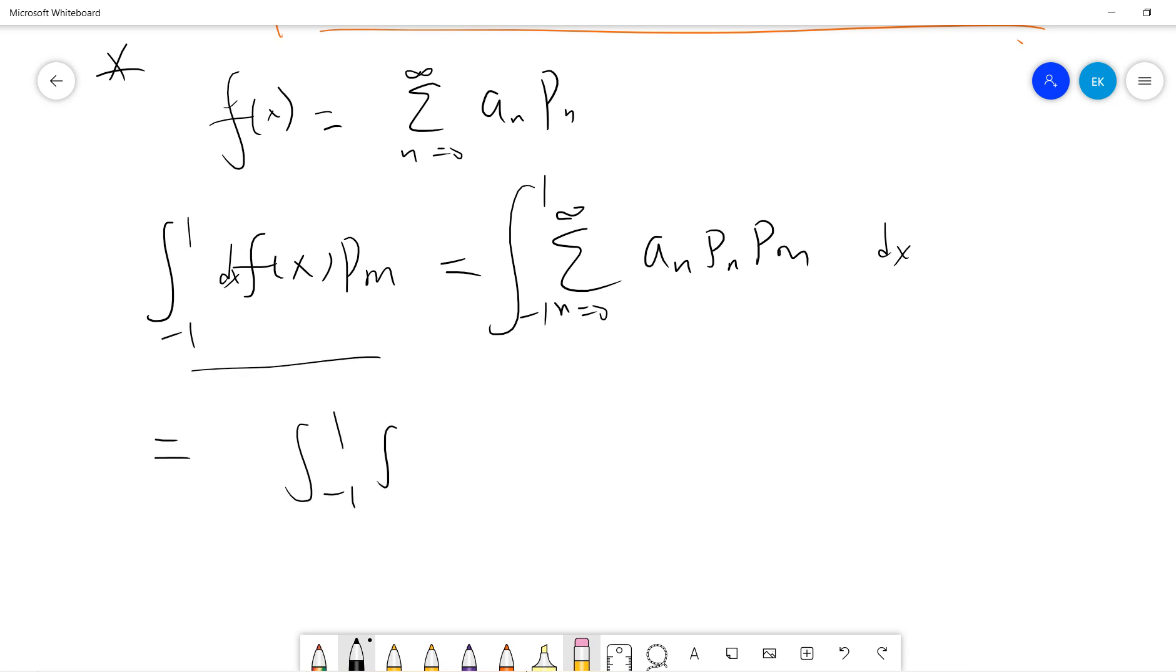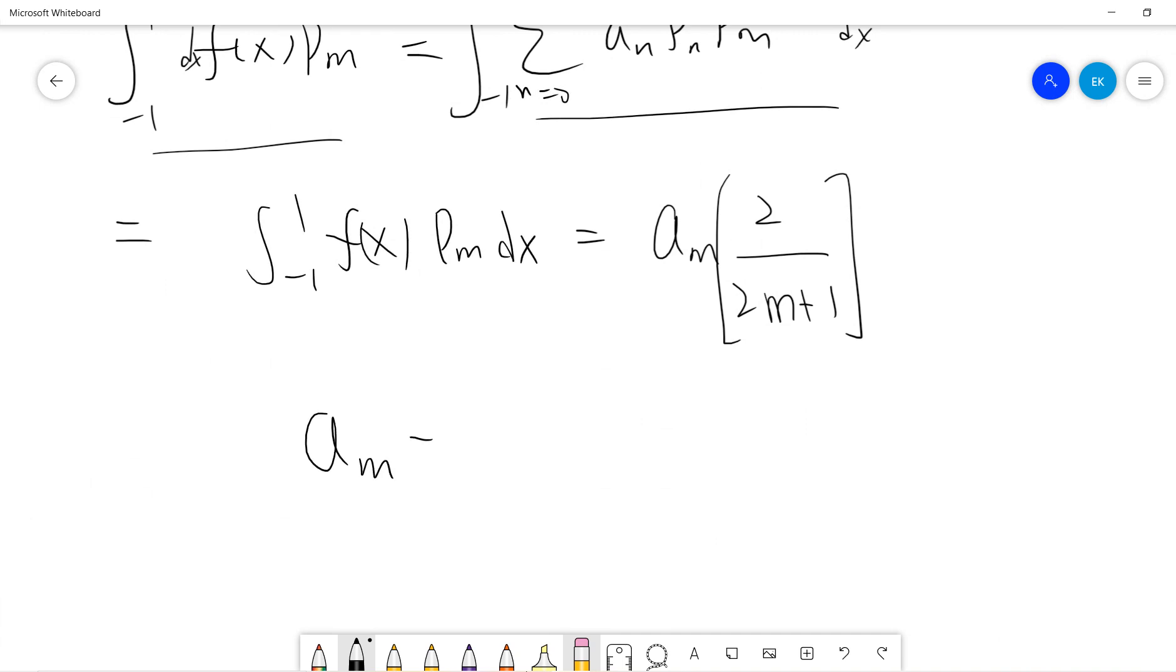So this term now we don't know how to compute because we don't know what is f. But fortunately, we notice that this only survives as m equals to n. So this is a_n times 2 divided by 2n plus 1. So the coefficient is just this.